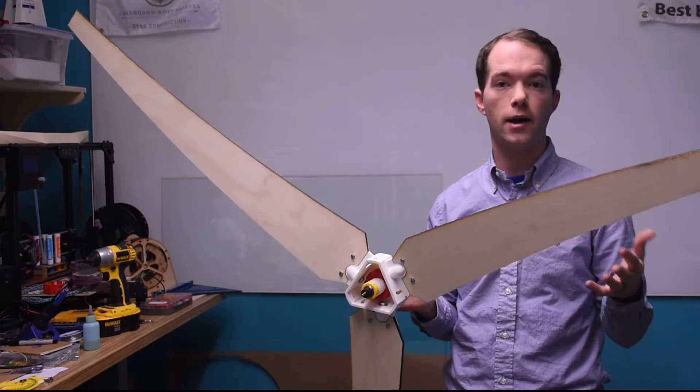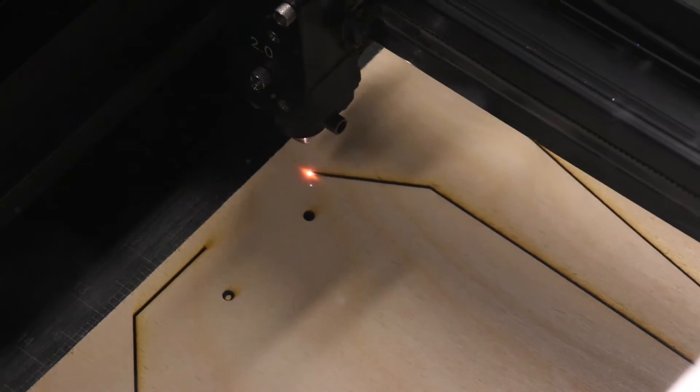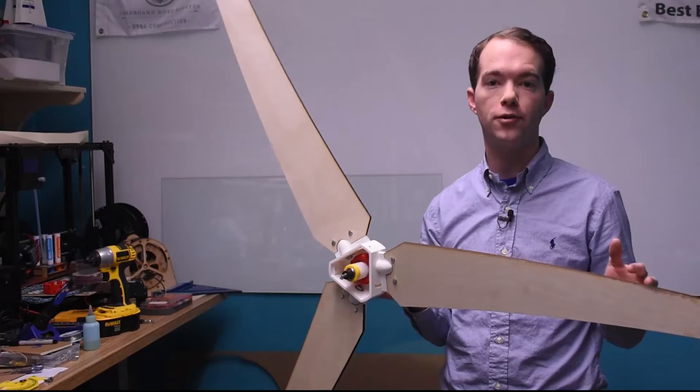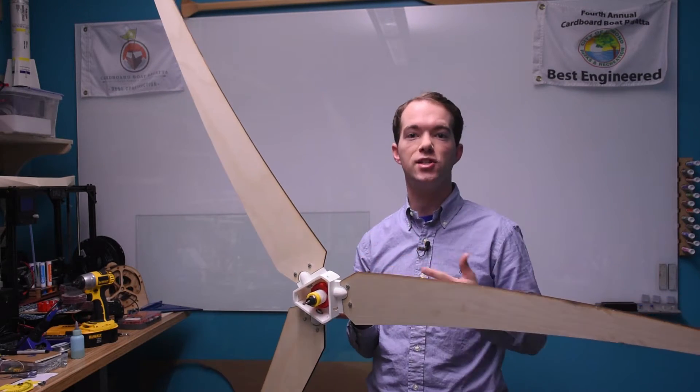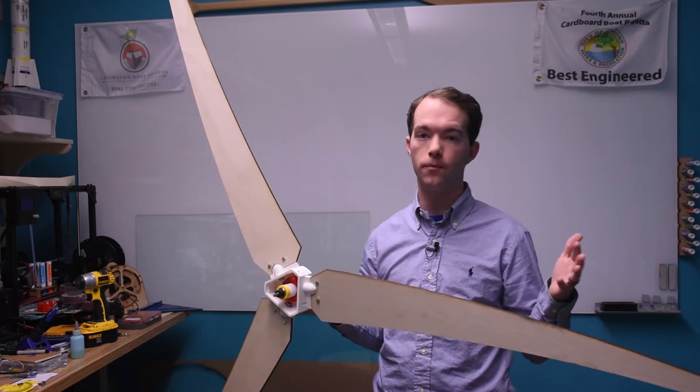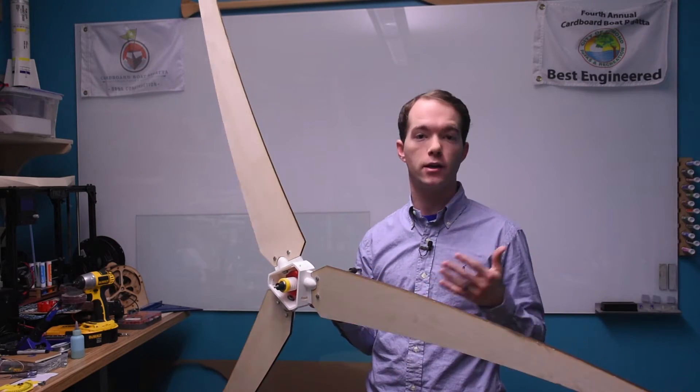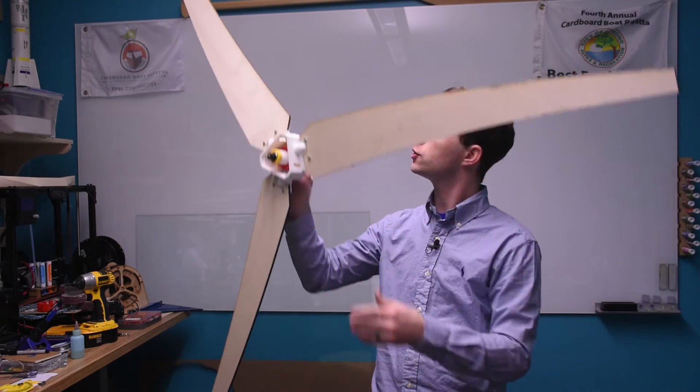These are blades that you can cut out on a bandsaw. These happen to be laser cut, but they're just quarter inch Baltic birch. They're 31 and a half inches long, giving me a 66 inch total rotor diameter. So the area of this thing is quite large, as you can see here.